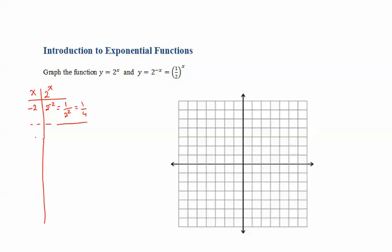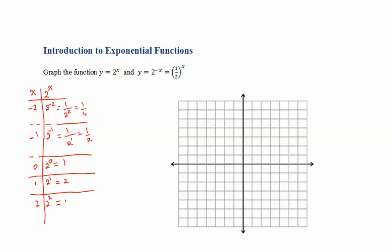When x is negative 1, we have 2 to the negative 1. A negative exponent becomes 1 over 2 to the positive exponent, which is 1 half. When x is 0, 2 to the power of 0 is equal to 1. When x is 1, 2 to the power of 1 is 2. When x is 2, 2 to the power of 2 is 4.